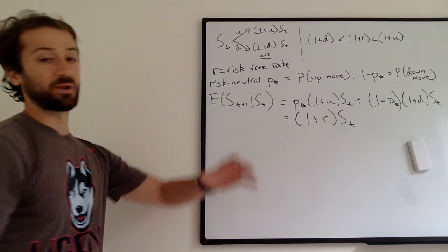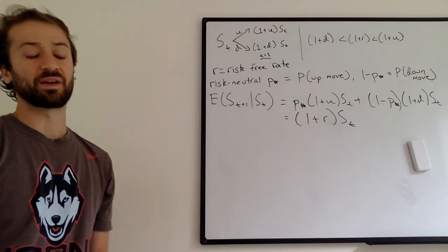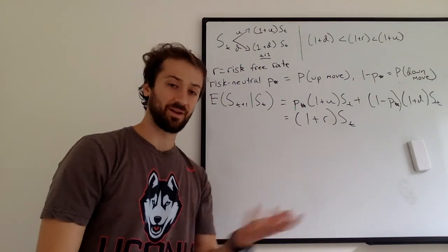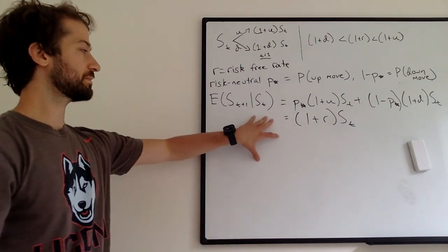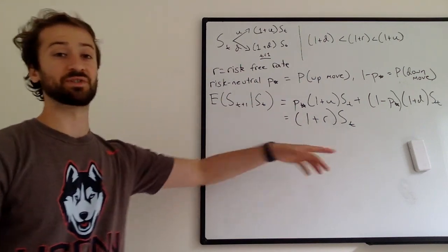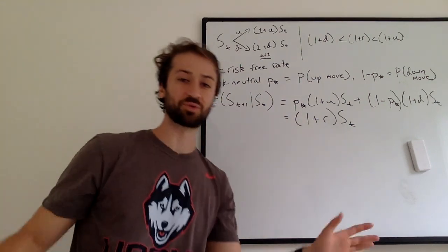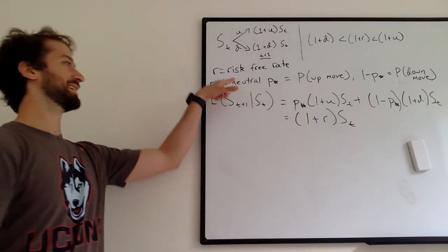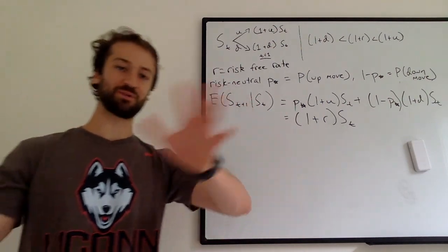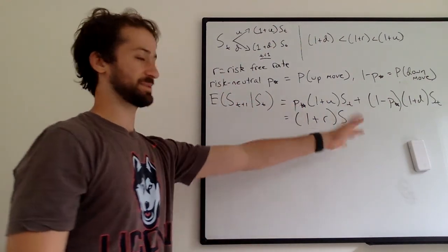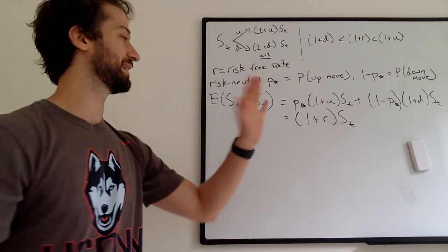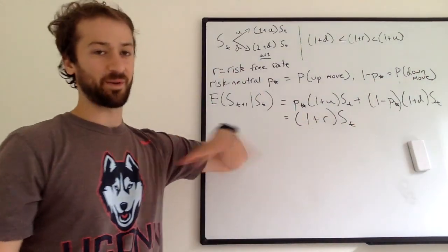What's cool about the risk-neutral probability is that it's the P that satisfies this equation. So the expectation of the stock at time T plus one is equal to if we just invested the amount of money that the stock is worth in the risk-free rate and we get one plus R times S T. So you can kind of see where the term risk-neutral comes from. If the stock has probability P star of going up, one minus P star going down, in expectation the expected value is that we make this amount of money, which would be the same if we were neutral to risk. If we didn't take risk and we just invested in the risk-free rate, right? Risk-free, risk-neutral rate.